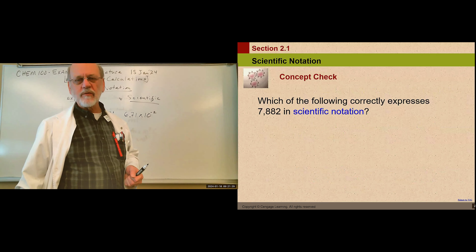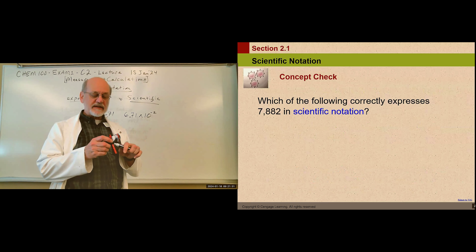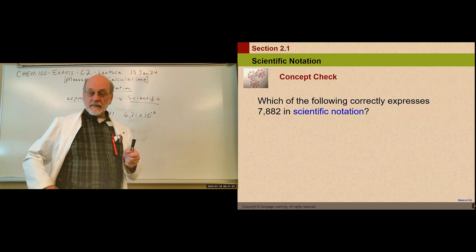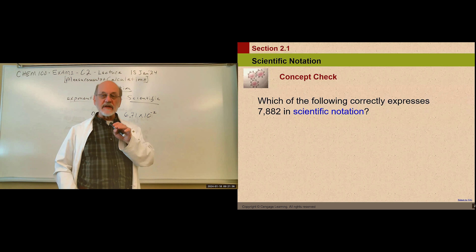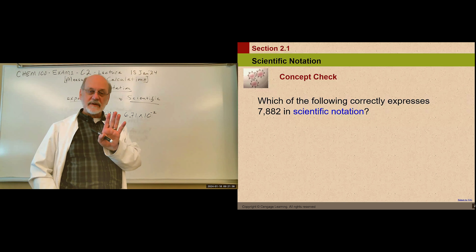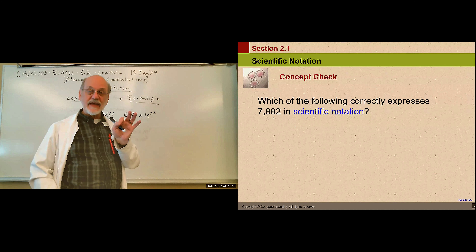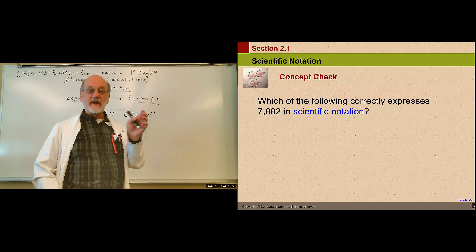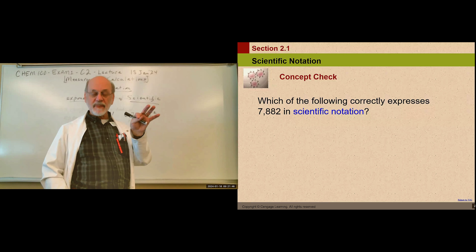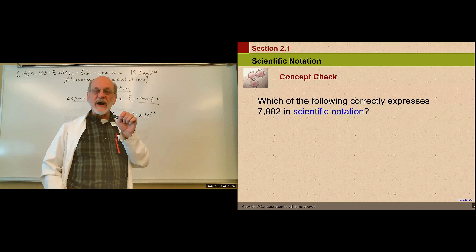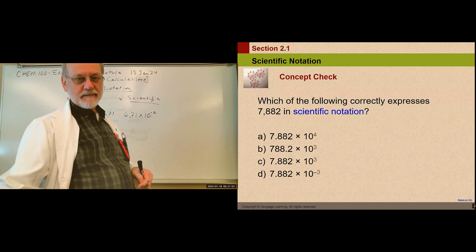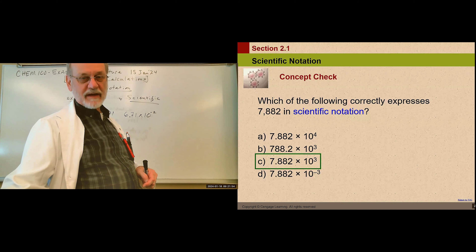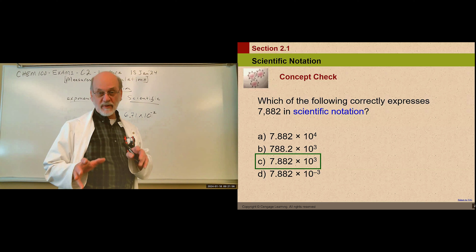How would we write 7,882 in scientific notation? The decimal is understood to be to the right of the last digit, so we move it to the left one, two, three places — that gives us 7.882, which is between one and ten — and we store a positive power of three in the exponent. So 7.882 times 10 to the third is the answer.